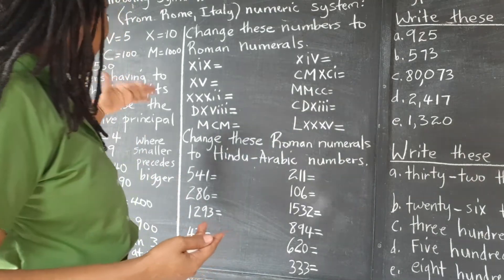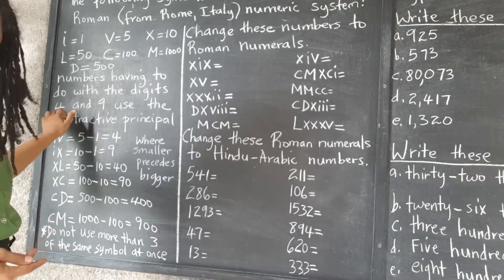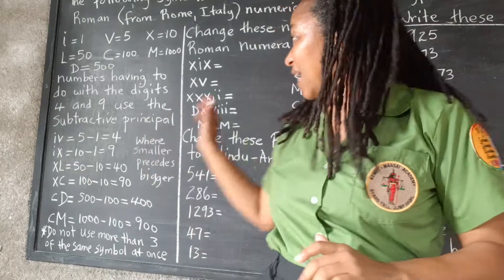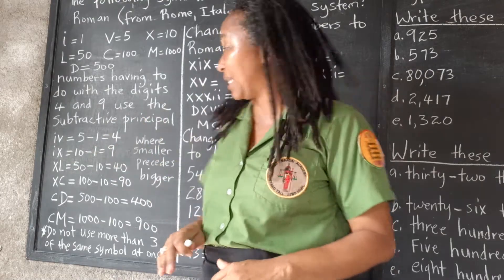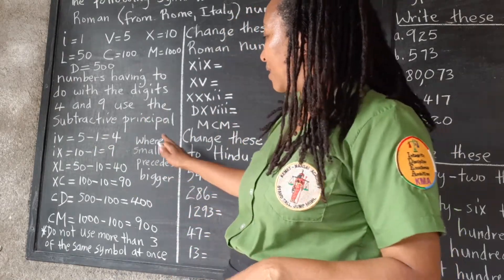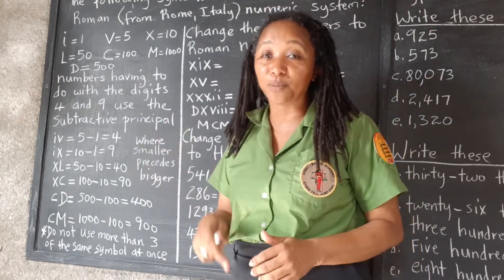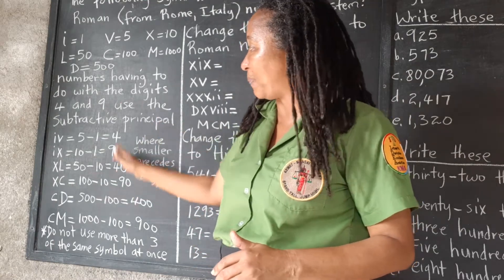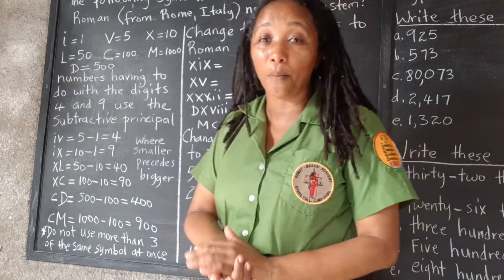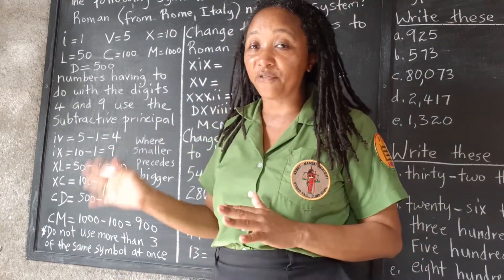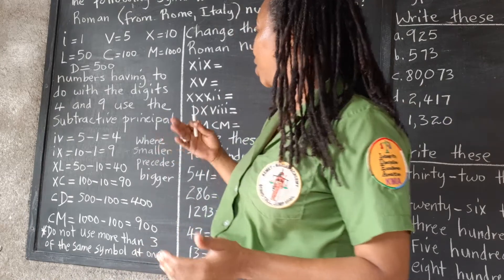This does not apply to numbers having to do with the digits 4 and 9. For those numbers, we use the subtractive principle. Once we see a smaller number preceding a bigger number, we subtract the smaller from the bigger. For all other numbers — those not involving 4s, 9s, 40s, 90s, 400s, 900s, and so on — we just add.